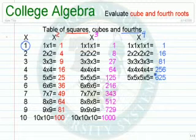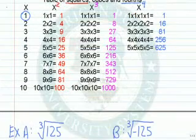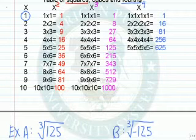Let me show you how to use this table. Suppose we're looking for the cube root of 125. Since the index is 3, we look in the x cubed column for the number 125. When we find it, we go back to the x column, and the answer is 5. The cube root of 125 equals 5, since 5 times 5 times 5 is 125.